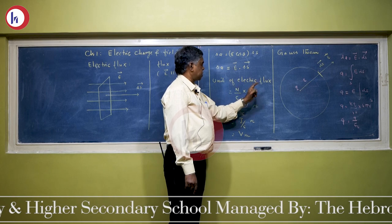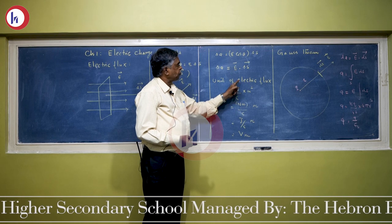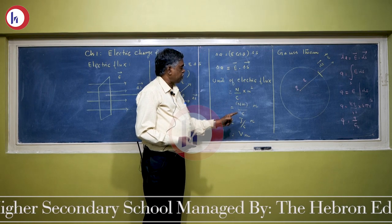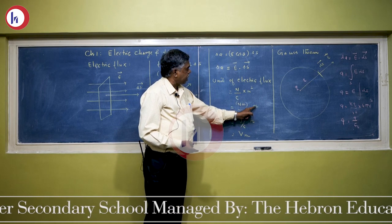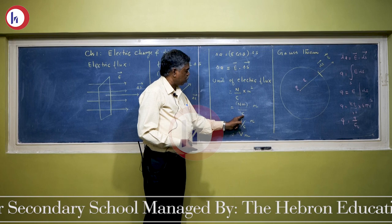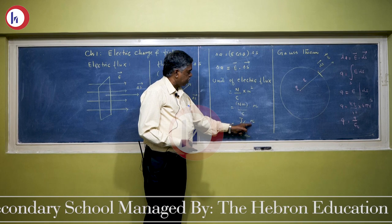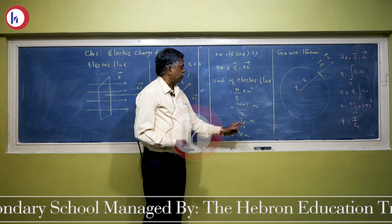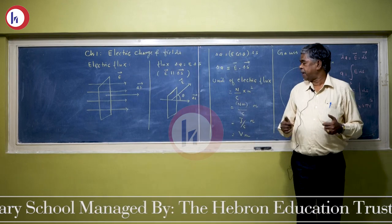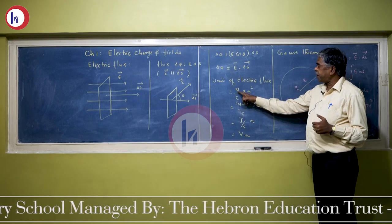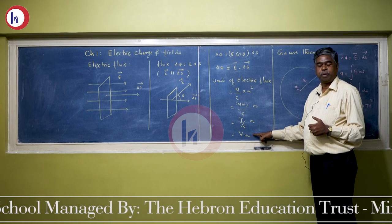What is the unit for electric flux? The unit for electric field is Newton per Coulomb, and area is meter squared. Therefore, the unit becomes Newton meter squared per Coulomb. Newton meter is nothing but a Joule, so it can also be written as Joule per Coulomb, which is Volt — giving us Volt meter. So we can use two units for electric flux in the SI system: Newton meter squared per Coulomb, or Volt meter.